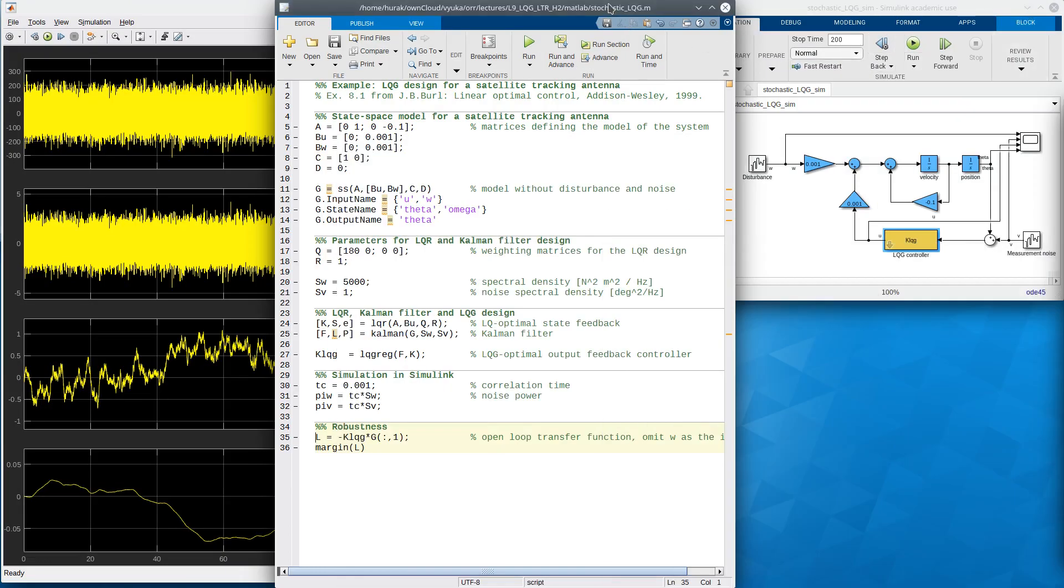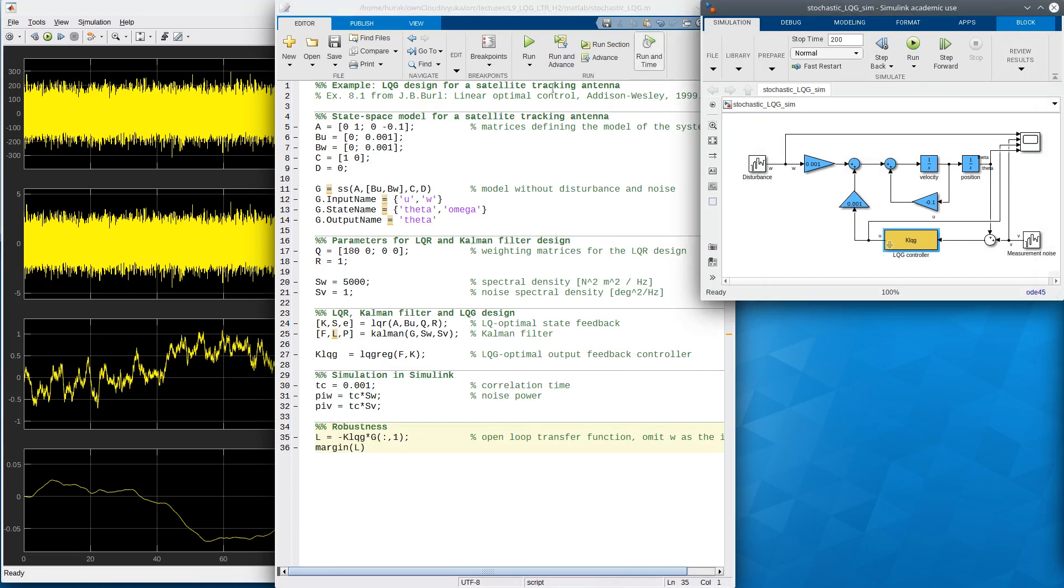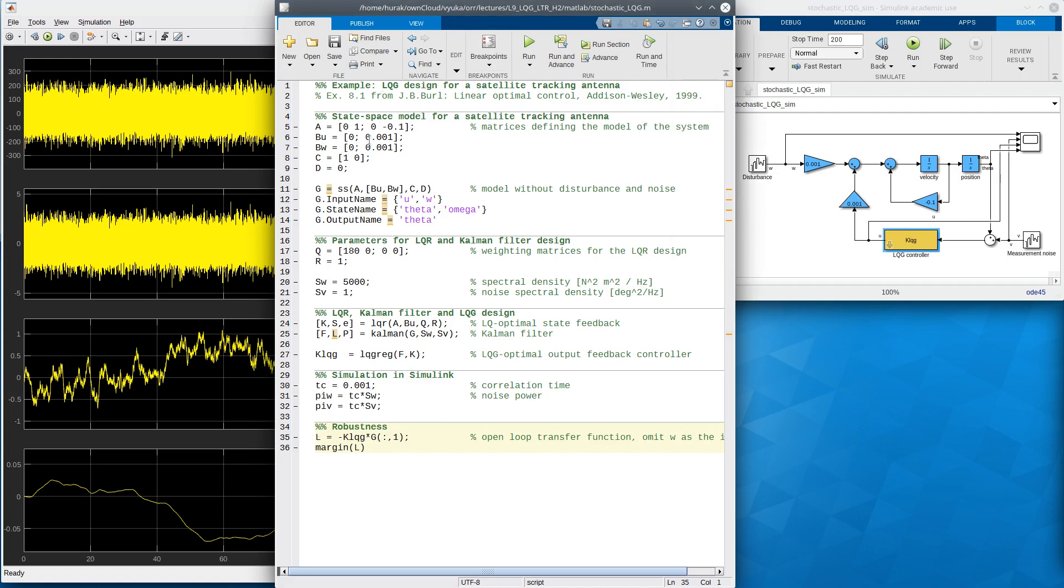Here comes the code, then I have the Simulink model for the simulation, and of course the scope with simulations from previous runs. Let's start with the code. In the first block you can see that I built the matrices defining the state space model. Note that I have two B matrices here, one corresponding to the control input U and the other to the disturbance. Then I built the state space model. For convenience, I labeled the inputs, states, and outputs.